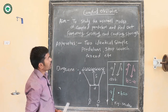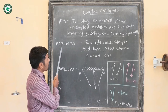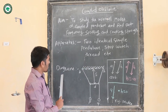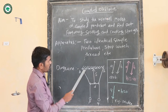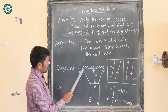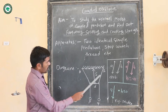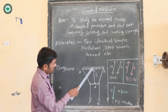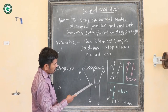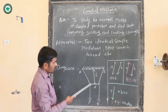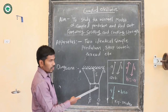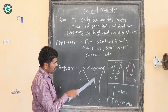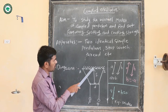The aim also includes finding the coupling strength. The apparatus for this experiment includes two identical simple pendulums, a stopwatch, and a thread. In the diagram, A and B are rigid supports where the simple pendulums P and Q are attached. The distance S is the vertical distance from the rigid support to the horizontal connecting thread, and D is the horizontal distance between the two pendulums.